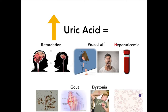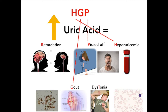Remember the mnemonic for HGPRT: H for hyperuricemia, G for gout, P for 'pissed off' — representing aggression and self-mutilation, R for retardation or intellectual disability, and T for dystonia.